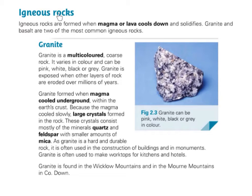Igneous rocks are formed when magma or lava cools down and solidifies. Granite and basalt are two of the most common igneous rocks.